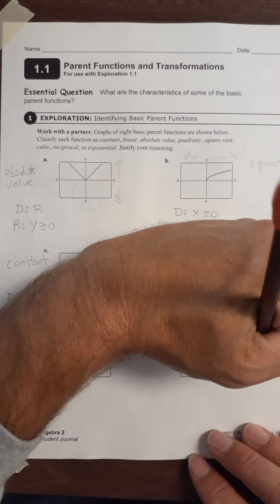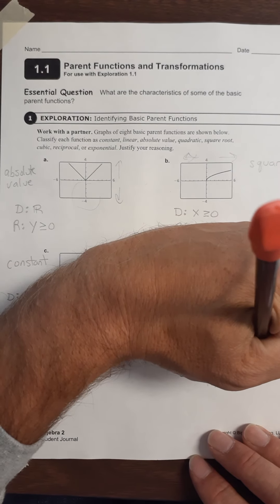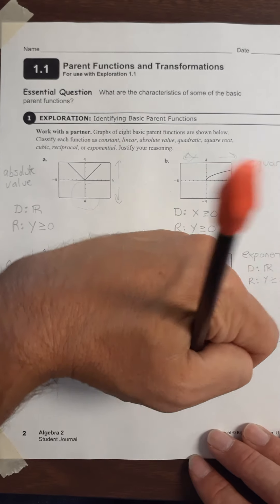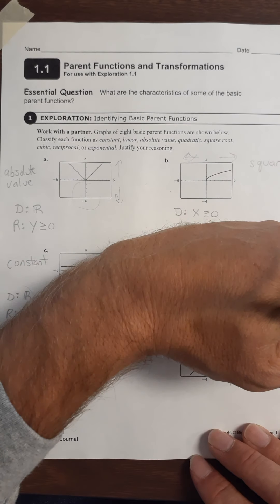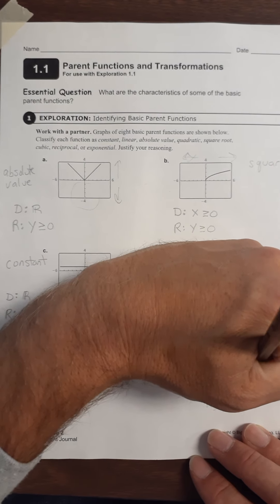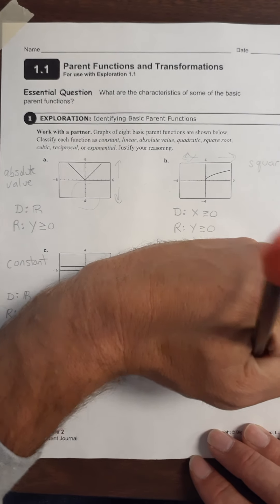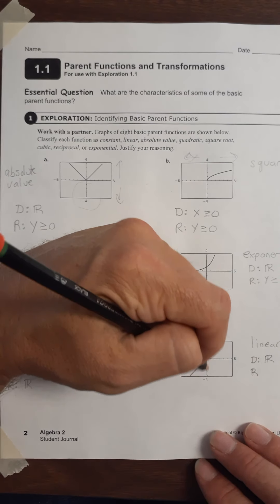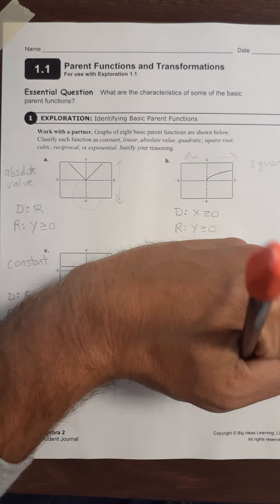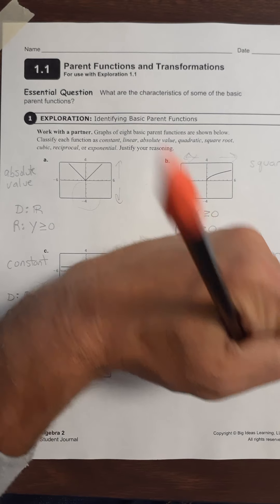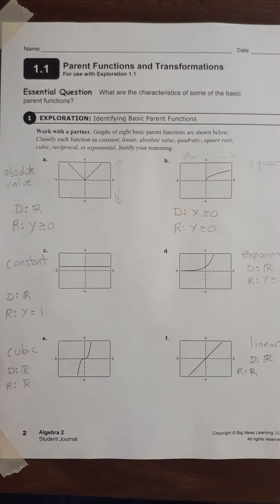For the linear function, the domain goes to the right forever and to the left forever — so all real numbers. The range goes up forever and it goes down forever — so all real numbers as well.